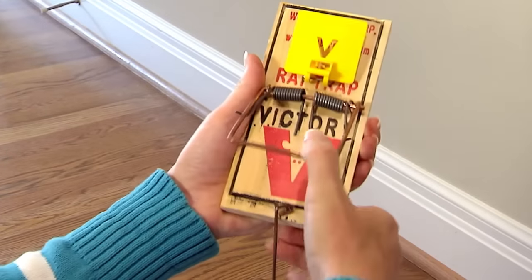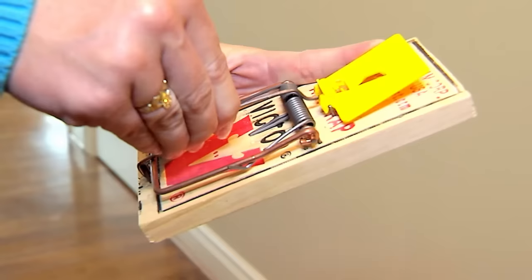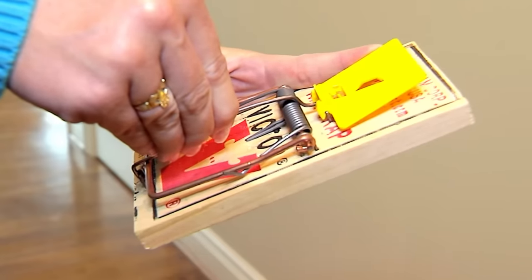Pull the kill bar back and hold it in place with your thumb. Take the arm bar over the kill bar and latch the end of the arm bar under the yellow petal.